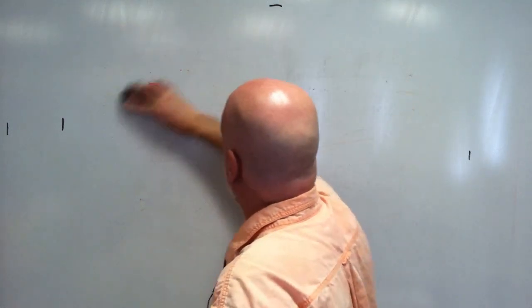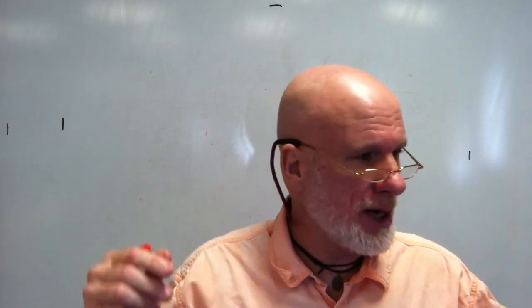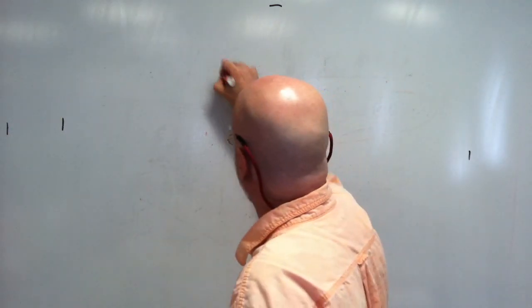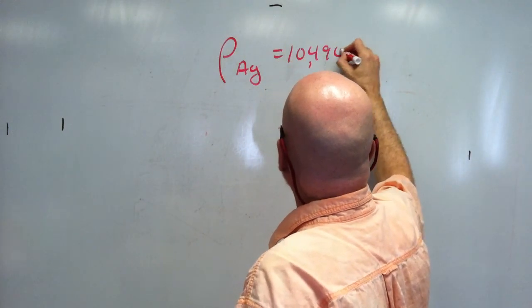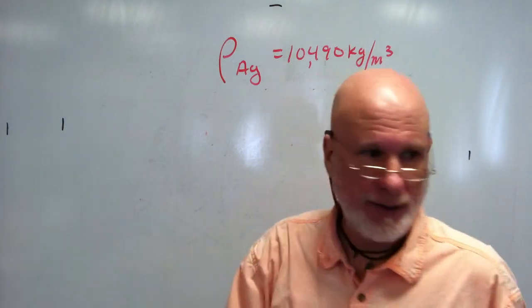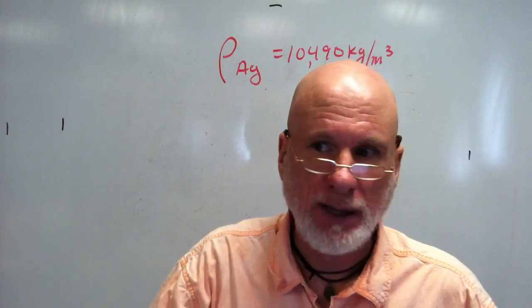Because those didn't record, let's use different numbers and see if you can come up with the actual answers. Give me a metal — silver. The density of silver is 10,490 kilograms per cubic meter.